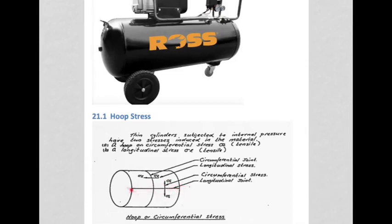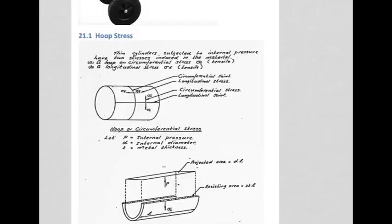Circumferential stress acts along this imaginary longitudinal joint. If you pictured the vessel having a longitudinal joint, across that joint would be circumferential stress trying to tear it apart. Similarly, a circumferential joint would have longitudinal stress trying to rip the vessel apart along that seam. Circumferential stress is often referred to as hoop stress.